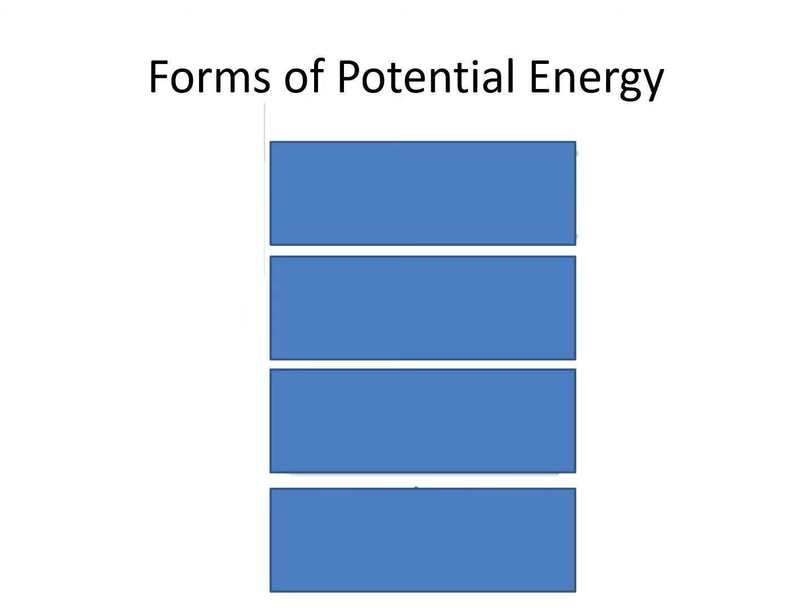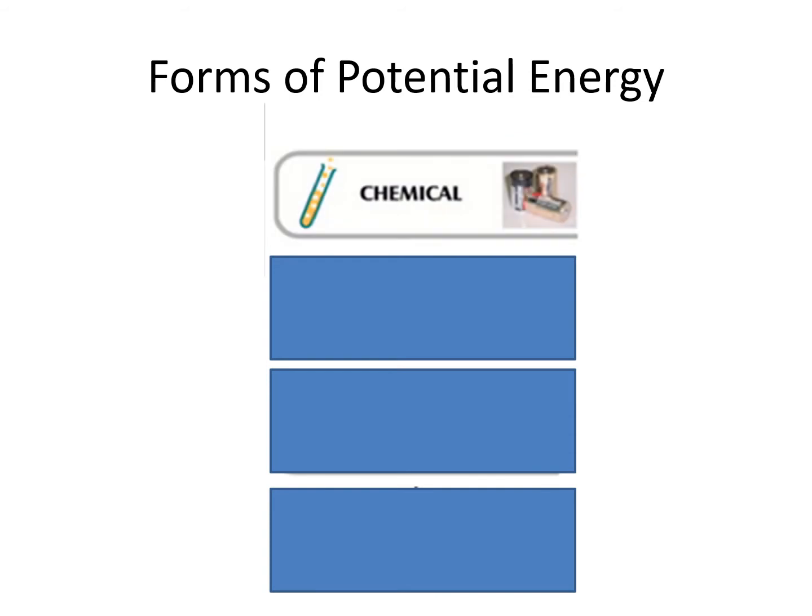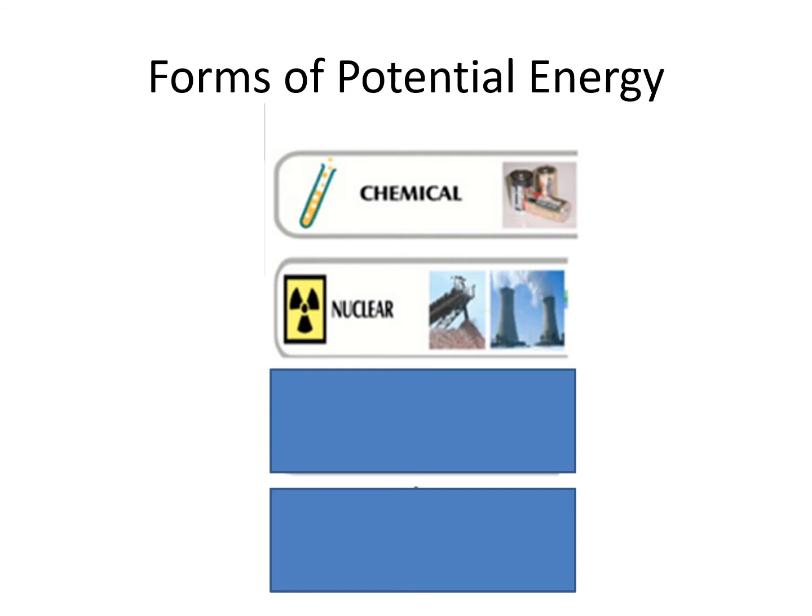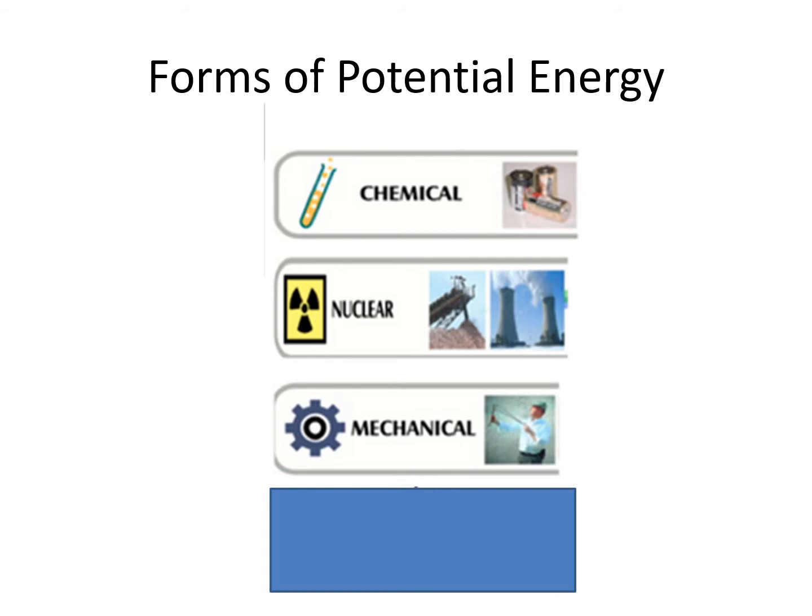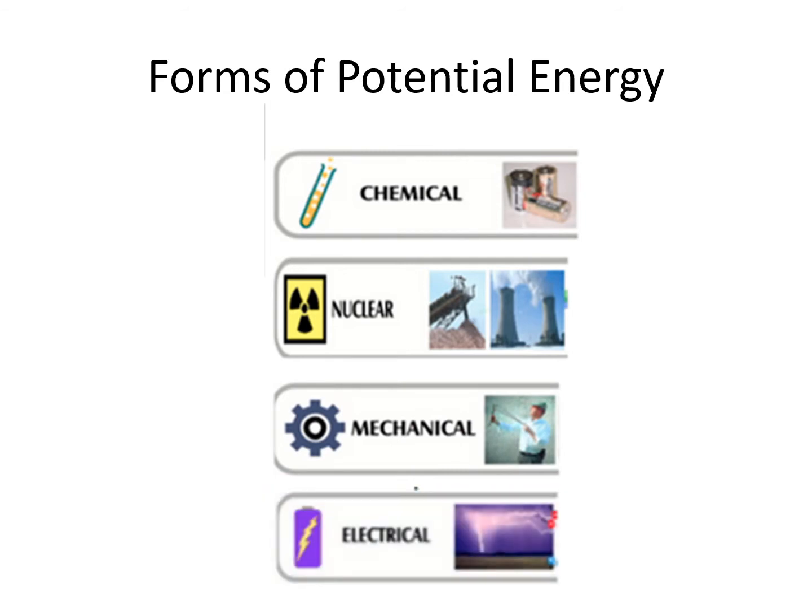Forms of potential energy include chemical, like in the dry cell or battery; nuclear, found in nuclear power plants and the sun's source of energy; mechanical, like pulling a slingshot; and electrical, like lightning.